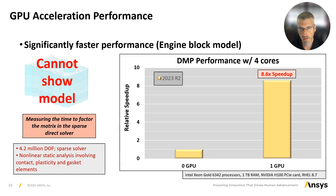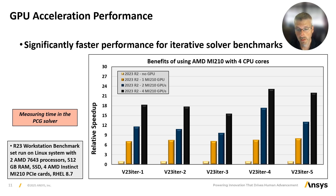I wanted to show a couple of slides highlighting the improved performance when accelerating on GPUs for mechanical simulations, to give a sense of how much speedup to expect. It's going to depend on the GPU and CPU hardware involved and the type of model used. Using a bulky 3D engine block model with higher order solid elements, and comparing an NVIDIA H100 GPU versus no GPU, we were able to get almost a 9x speedup in the equation solver. This next slide shows the acceleration using GPUs for our iterative solver, where we ran a variety of benchmark models from the V23 benchmark package using the iterative solver on a machine with four AMD MI210 cards — showing significant speedup in the PCG solver when using one, two, and four GPU cards.